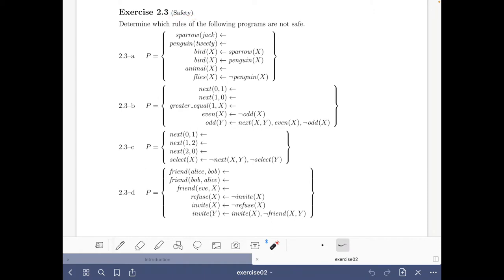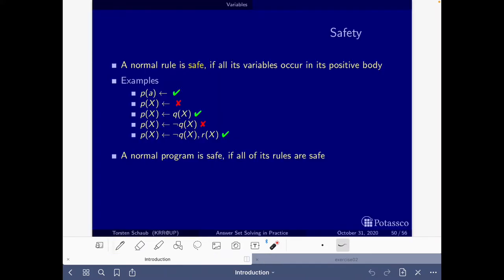We have to determine which rules of the following programs are not safe. Let's go quickly to the part of the slides where safety is explained. This is really straightforward: a normal rule is safe if all its variables occur in its positive body. Here you have some examples. A normal program is safe if all of its rules are safe.